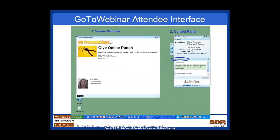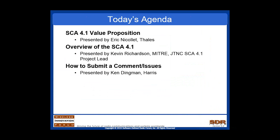There are two ways to ask questions, and the speakers today have asked that you ask questions as we go to keep the context maintained. The first way is to type your question into your screen — I'll see it and raise it to the speaker. The other way is to click the hand button on your control interface, essentially raising your hand, and then I can call on you, unmute your microphone, and you can ask your question that way.